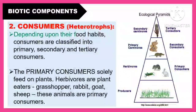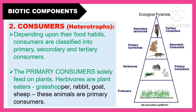Depending upon their food habits, consumers are classified into primary, secondary, and tertiary consumers. The primary consumers solely feed on plants. Herbivores are plant-eaters. These are the grasshopper, rabbit, goat, sheep, and these animals are primary consumers.